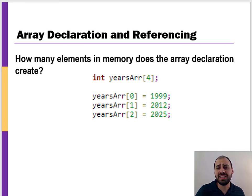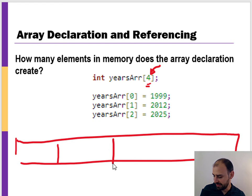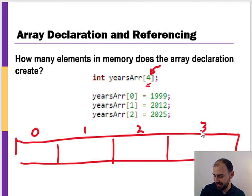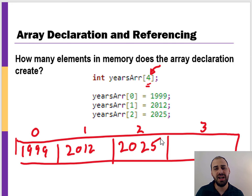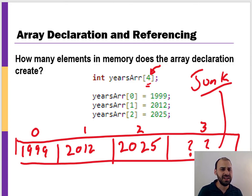Let's look at another example: how many elements does this array declaration create? The key is looking at the size, which is four. So in memory we have space for four items — index zero, one, two, and three. We initialize 1999 at location zero, 2012 at location one, 2025 at location two. Location three we didn't initialize, so it contains whatever junk happens to be in that memory location — that's why it's dangerous to use an uninitialized element.